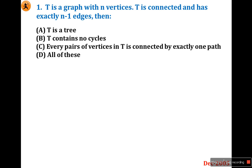Look at the options: T is a tree; T contains no cycle; every pair of vertices in T is connected by exactly one path. This is the definition of a tree — a connected acyclic graph is called a tree.